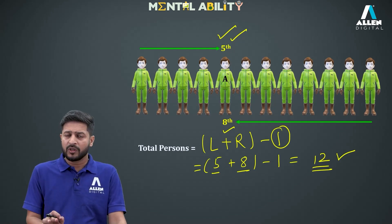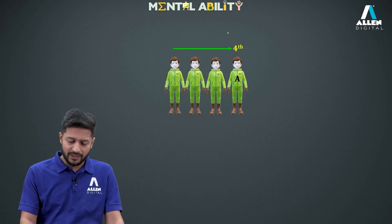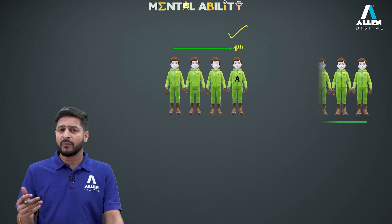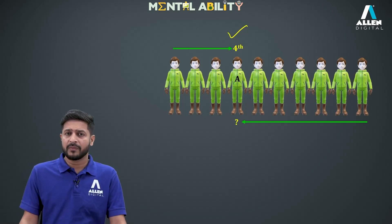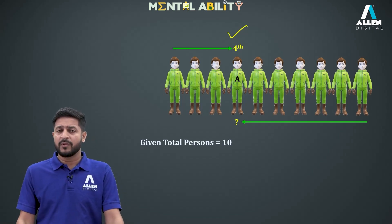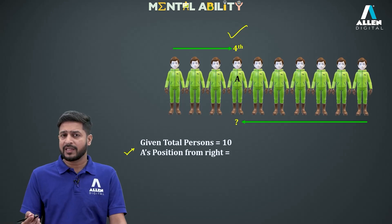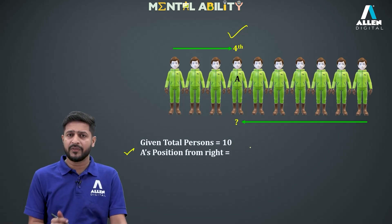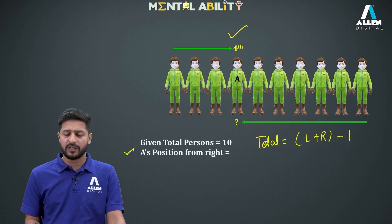Now let's understand one more important concept. Again we have person A whose rank from the left end is 4th, but this time we need to find the rank from the right end. For this, we need one more piece of data — the total number of persons. Using the formula: Total = L + R − 1, we can rearrange to find the missing rank.